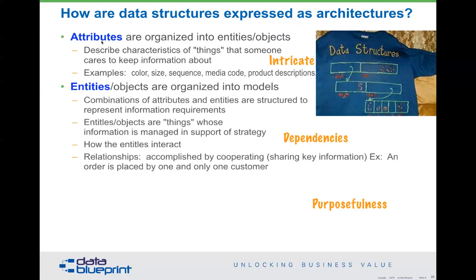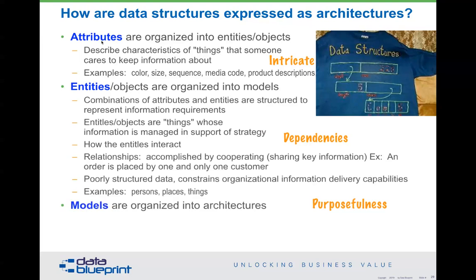The entities are organized into models — combinations of attributes and entities to represent information requirements. These entities are roughly equivalent to objects, and they are things about information that are managed in support of strategy. So if our strategy involves customers, then having customer information is important. The entities also show how they react with each other through the relationships we need to have. Poorly structured data constrains organizational data delivery capabilities. From an entity perspective, they may be persons, places, or things.